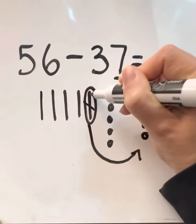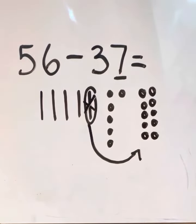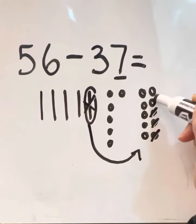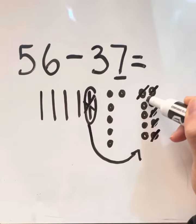Cross that one out so we know that one's not there anymore. Okay, now we can do our subtraction, right? Okay, how many ones do we have to take away? Seven. Seven. Count with me. One, two, three, four, five, six, seven.